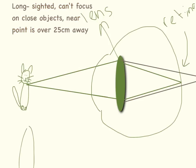If you are long sighted it means you can't focus on close objects so your near point is over 25cm away.